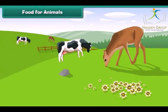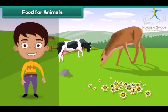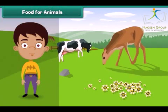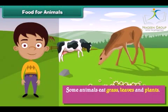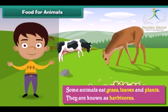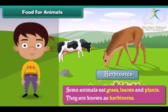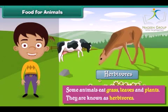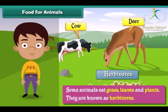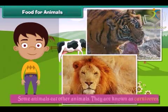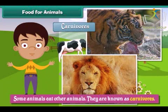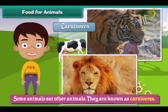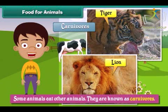Some animals eat grass, leaves and plants — they are known as herbivores. Examples of herbivores are cows, deer etc. Some animals eat other animals — they are known as carnivores. Examples of carnivores are lions, tigers etc.